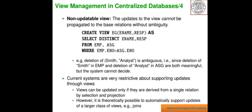In a non-updatable view, the update to the view cannot be propagated to the base relation without ambiguity. If attributes other than title are hidden by the view, they would be assigned null values. The following view is not updatable: CREATE VIEW ag (eno, name, resb) AS SELECT DISTINCT eno FROM emp, asg WHERE emp.eno = asg.eno. For example, deletion of the tuple (smith, analyst) cannot be propagated since it is ambiguous — deletion of smith in relation EMP or analyst in relation ASG are both meaningful but the system does not know which is correct.